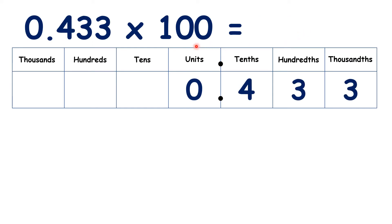What is 0.433 times 100? We can move the digits across, and we have 43.3.